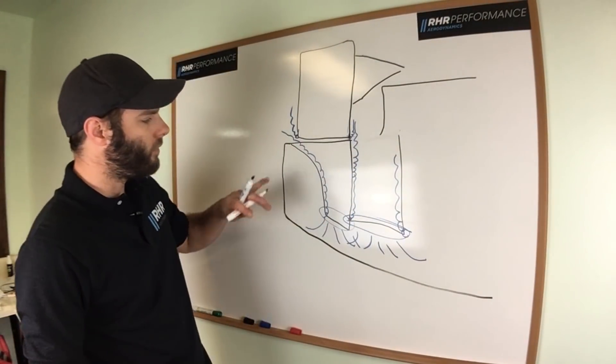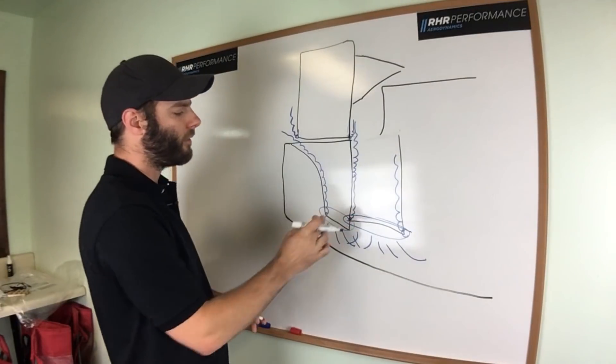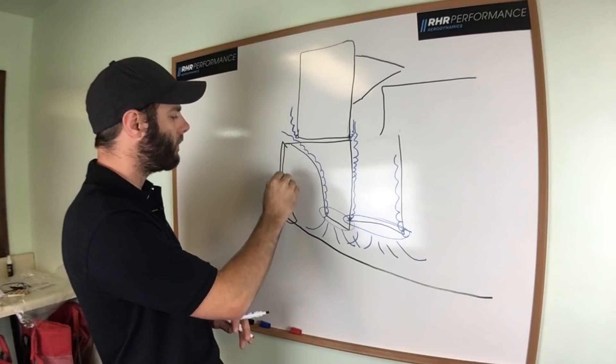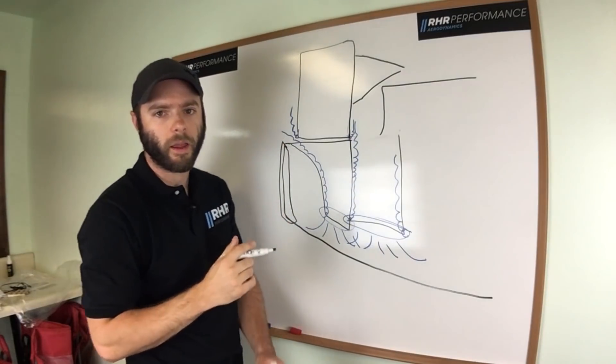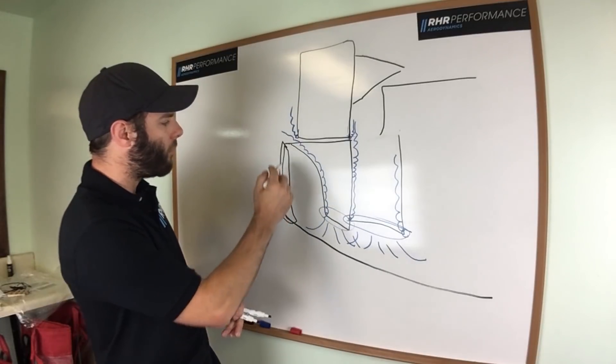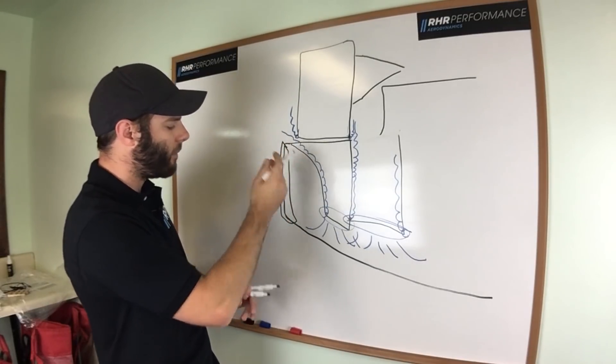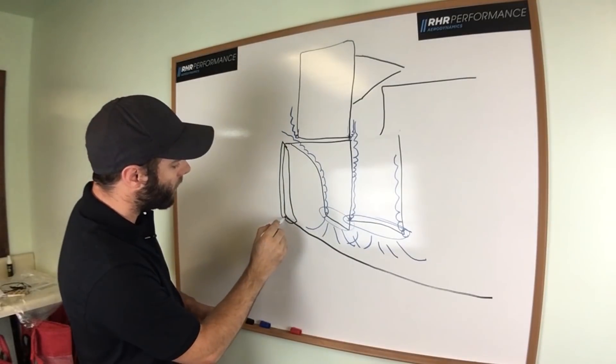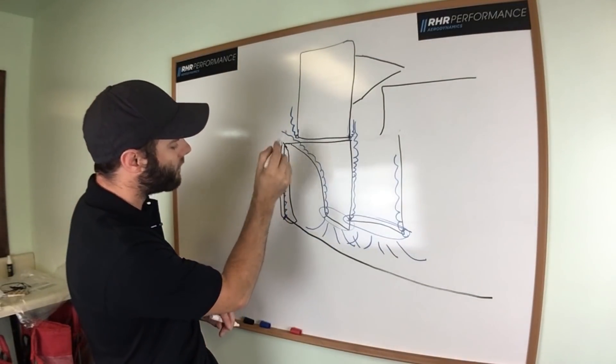So one trick you can do to help work the outer tunnel harder is add some sort of end plate on the side of your splitter like mentioned earlier. What the end plate does is it'll build up more high pressure on the top,